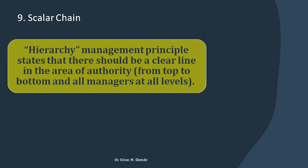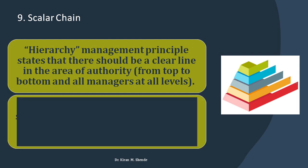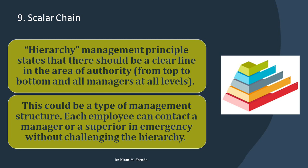The scalar chain principle states that there should be a clear line of authority from top to bottom across all management levels. There has to be a clear-cut hierarchy in an organization for it to function effectively. In an emergency, each employee can contact a manager or supervisor without challenging the hierarchy. The organization should always follow an open-door policy so that any employee can approach top management to explain a problem.